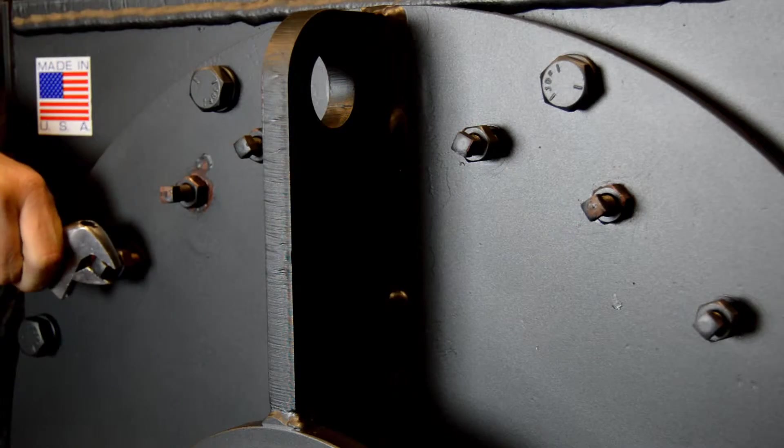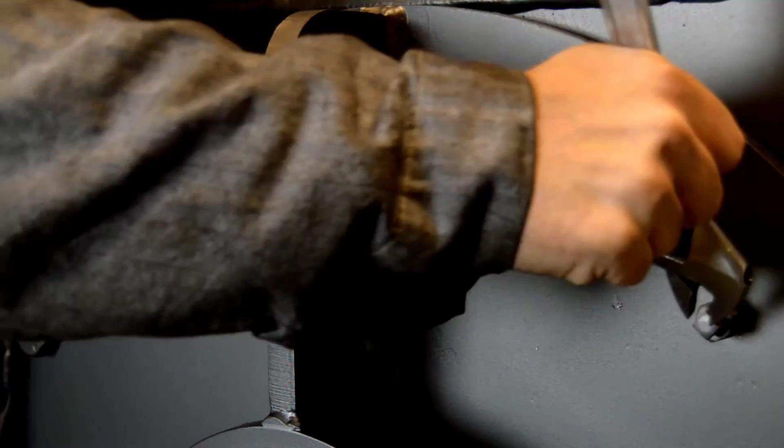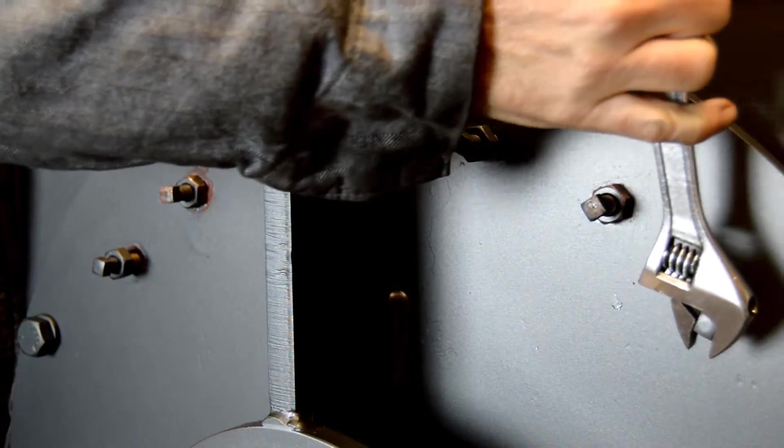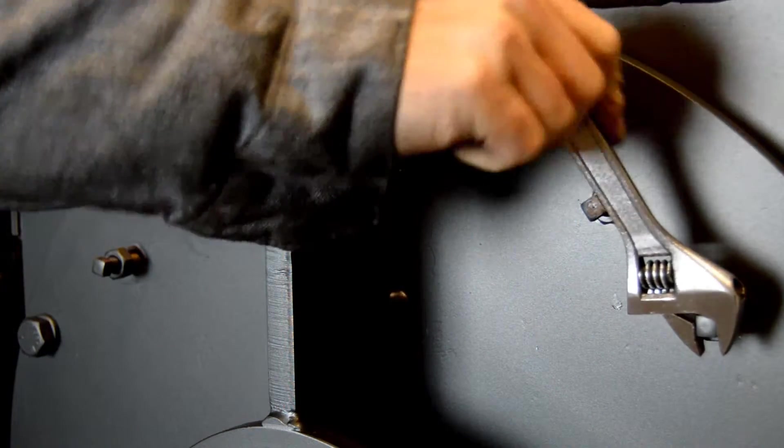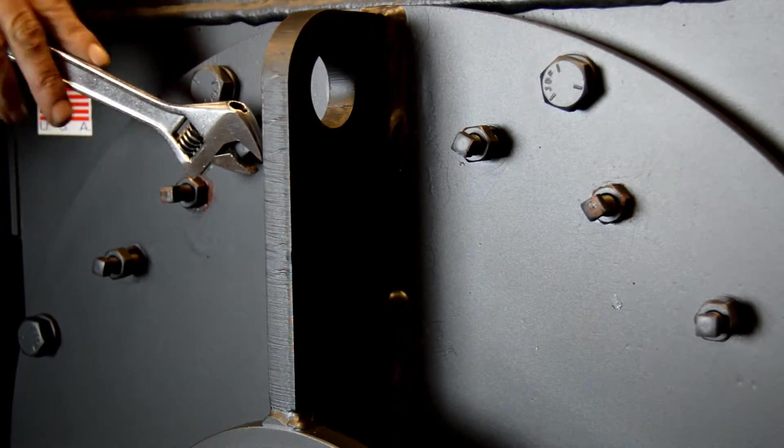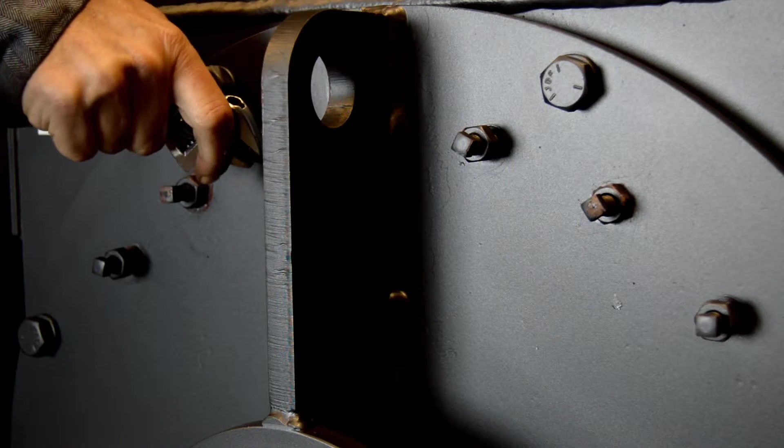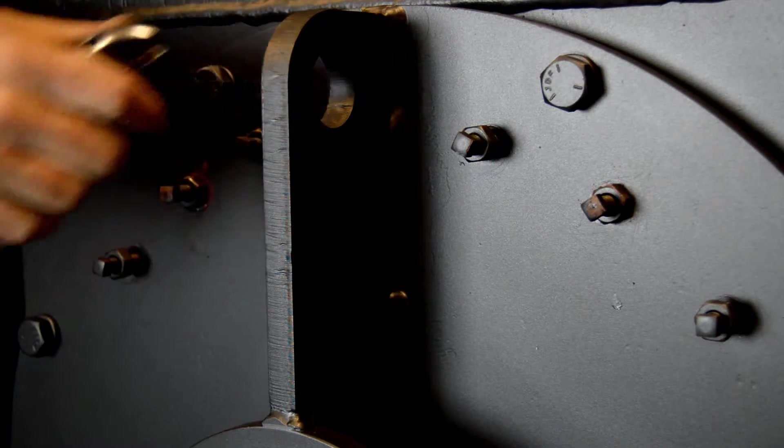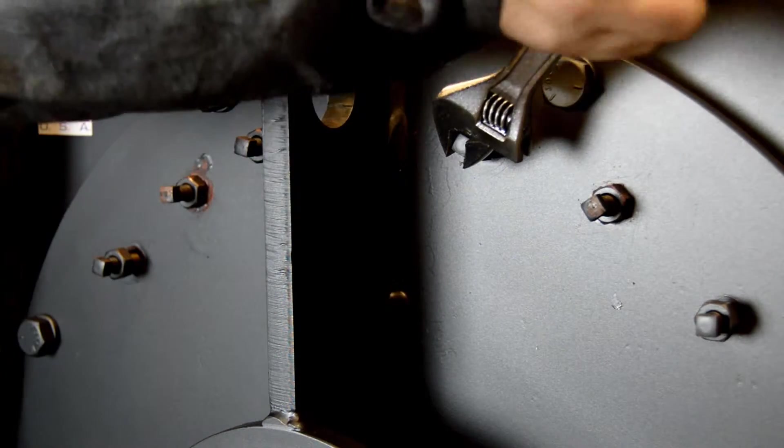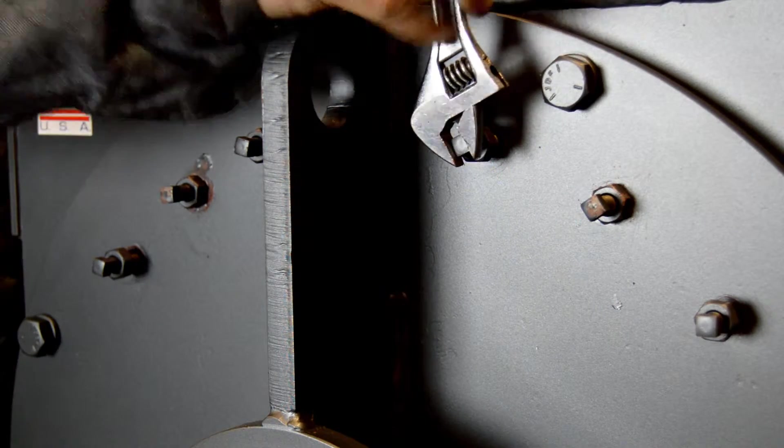Then loosen the pusher bolts just a little bit, trying to keep them about equal. A good rule of thumb is about a quarter turn. This will relieve the tension, allowing the brass to move back. You may have to repeat this step multiple times to get the proper results.